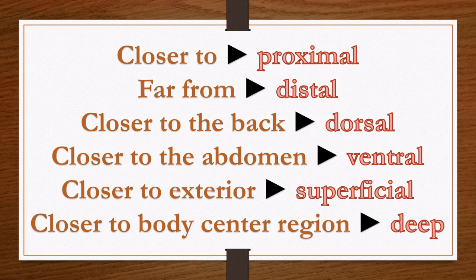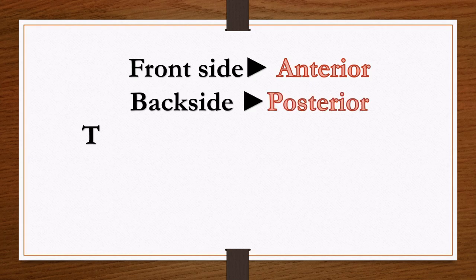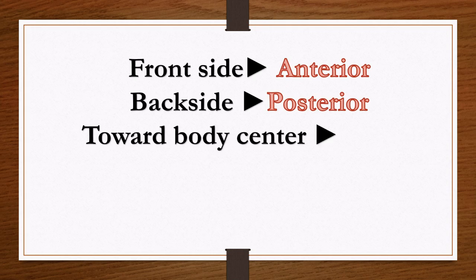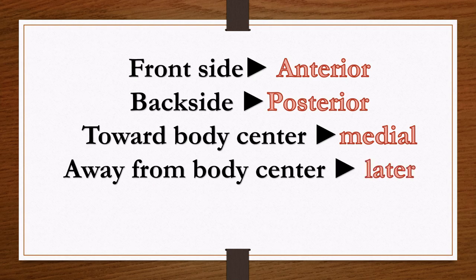When you go toward the abdomen it is ventral, and the position closer to or towards the back is dorsal. When one part of the body is far from another we say it is distal; when it is closer, it is proximal. If an individual is in a good anatomical position, the front side is anterior and the back side is posterior. Then towards the body center it is medial, and away from the body center it is lateral.